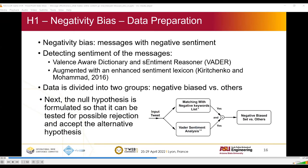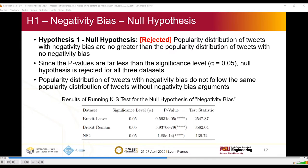Now let's see each of these hypotheses. The first one is negativity bias. We considered messages with negative sentiment as the ones that carry a negativity bias. We detected the sentiment of a message using the VADER sentiment analysis library, augmented with an enhanced sentiment lexicon. If the data passes these two conditions, it is placed into the negative biased group. There are two groups: negative biased versus others. The null hypothesis formulation here is that the popularity distribution of tweets with negativity bias is no greater than the popularity distribution of tweets with no negativity bias.